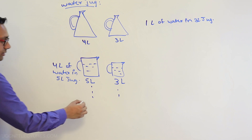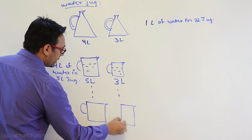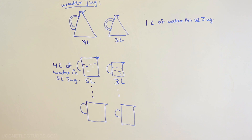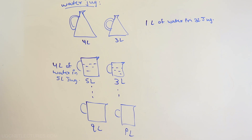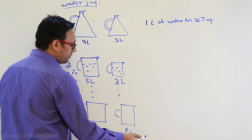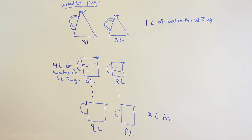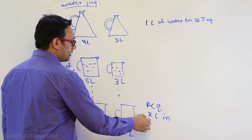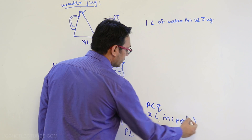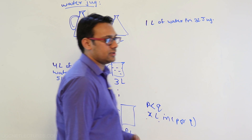There are more variations to these problems with different capacities. In the general form, the first jug holds q liters of water and the second jug holds p liters of water. The question is: can you find x liters of water in the q liter jug or in the p liter jug? The p liter jug has a larger capacity than the q liter jug — can you find exactly x liters?